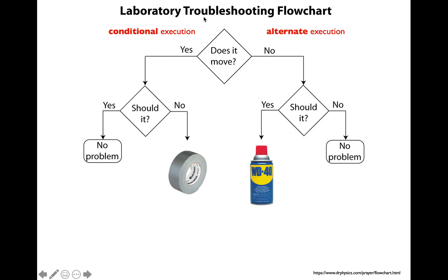The part of the flowchart which is about the yes answer is called conditional execution. The part of the flowchart which is about the no answer is called alternate execution.